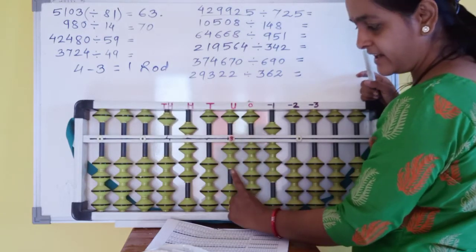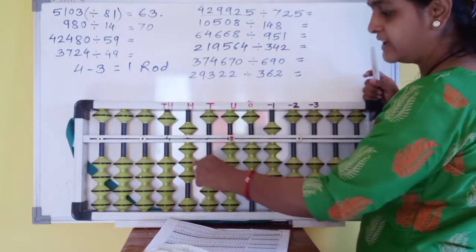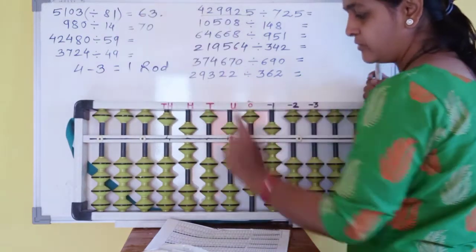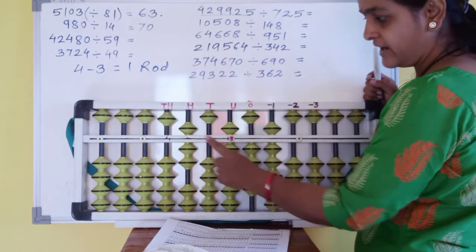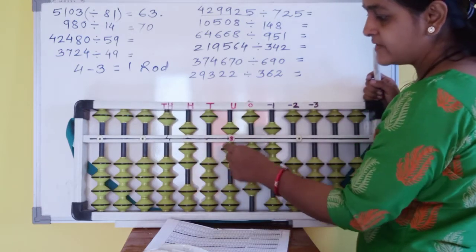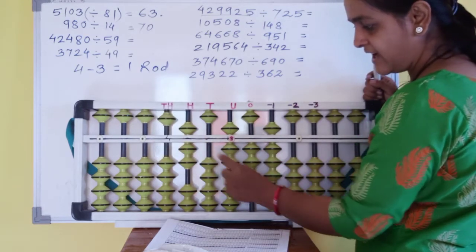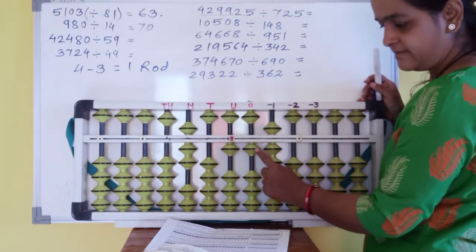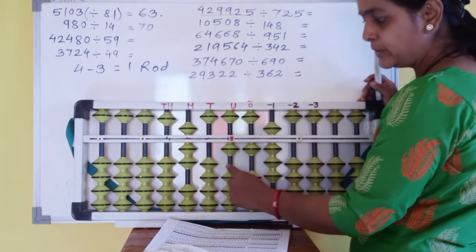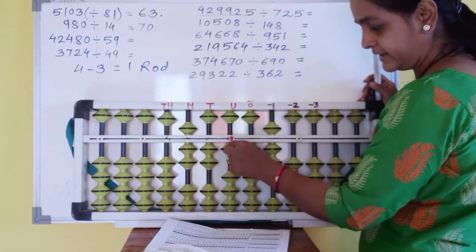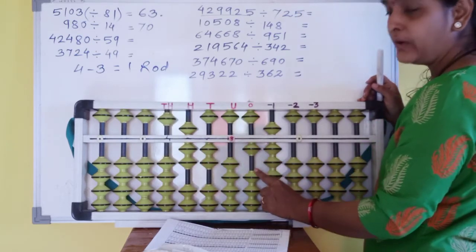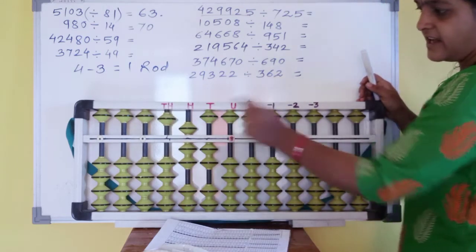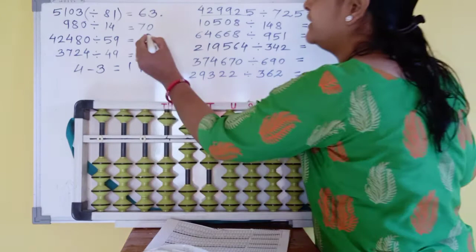Nine eights is possible? No. Then less one and five. Now nine sevens — nine sevens is 63. Now there is eleven. Two times — ten, one zero. And nine times is eighteen. That is the answer: 72.